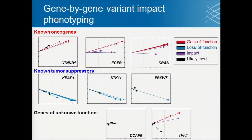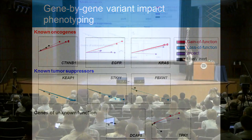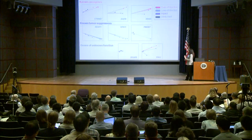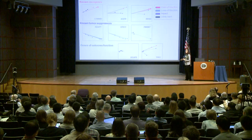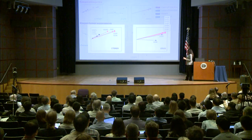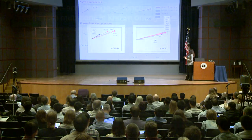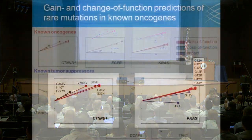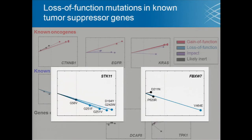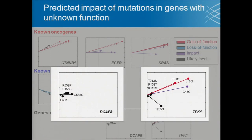When we look at this visualization gene by gene, we see interesting patterns with known oncogenes, known tumor suppressors, and genes of unknown function. Many gain-of-function or change-of-function mutations appear in known oncogenes. For known tumor suppressor genes, we see many loss-of-function predictions. And for genes with unknown function, some have no mutations predicted to be impactful, while others may have a functional impact.